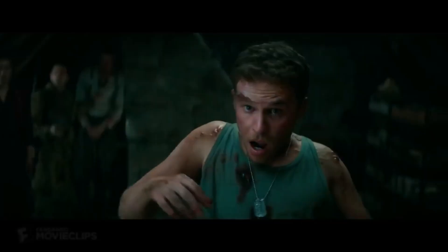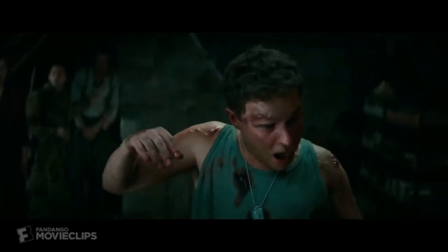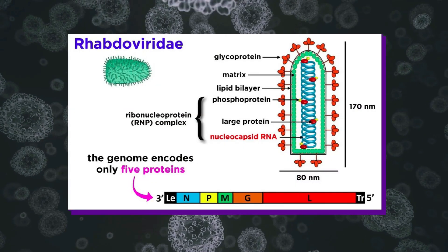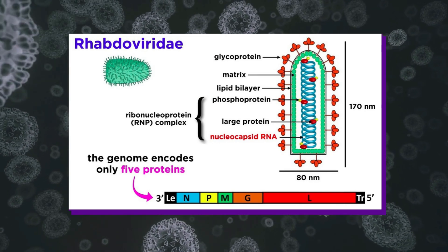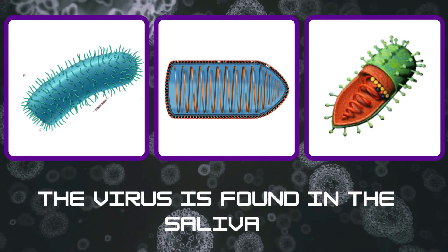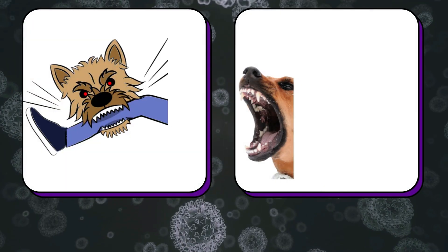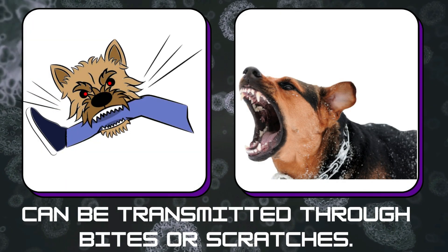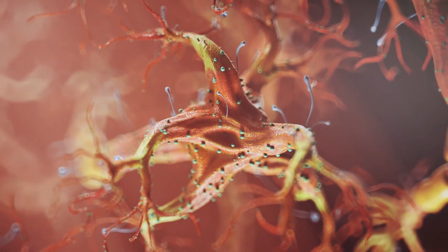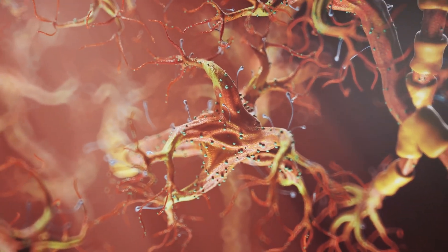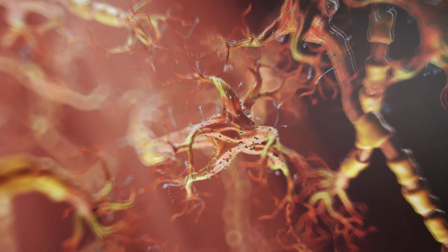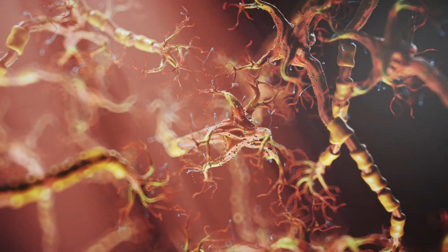But is rabies a virus that could turn us all into zombies? Let's take a closer look at this scary virus. Rabies is caused by Lyssavirus, a member of the Rhabdoviridae family. The virus is found in the saliva of infected animals and can be transmitted through bites or scratches. Once the virus enters the body, it travels to the brain where it begins to replicate, then spreads to other parts of the body, causing the characteristic symptoms of rabies.